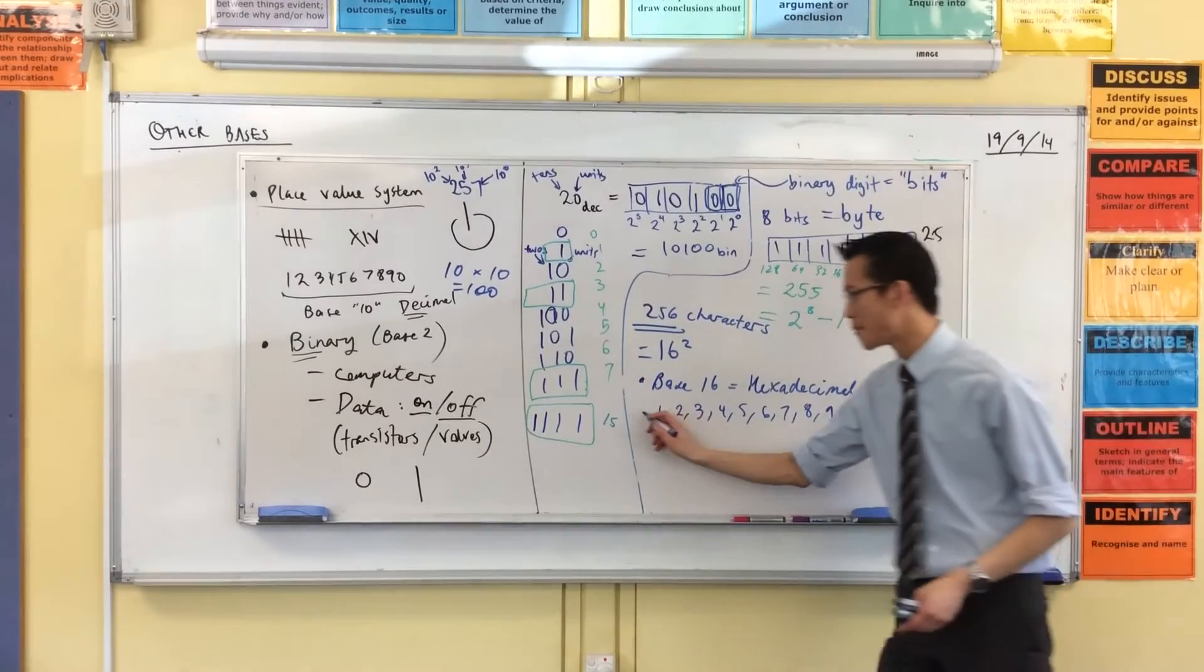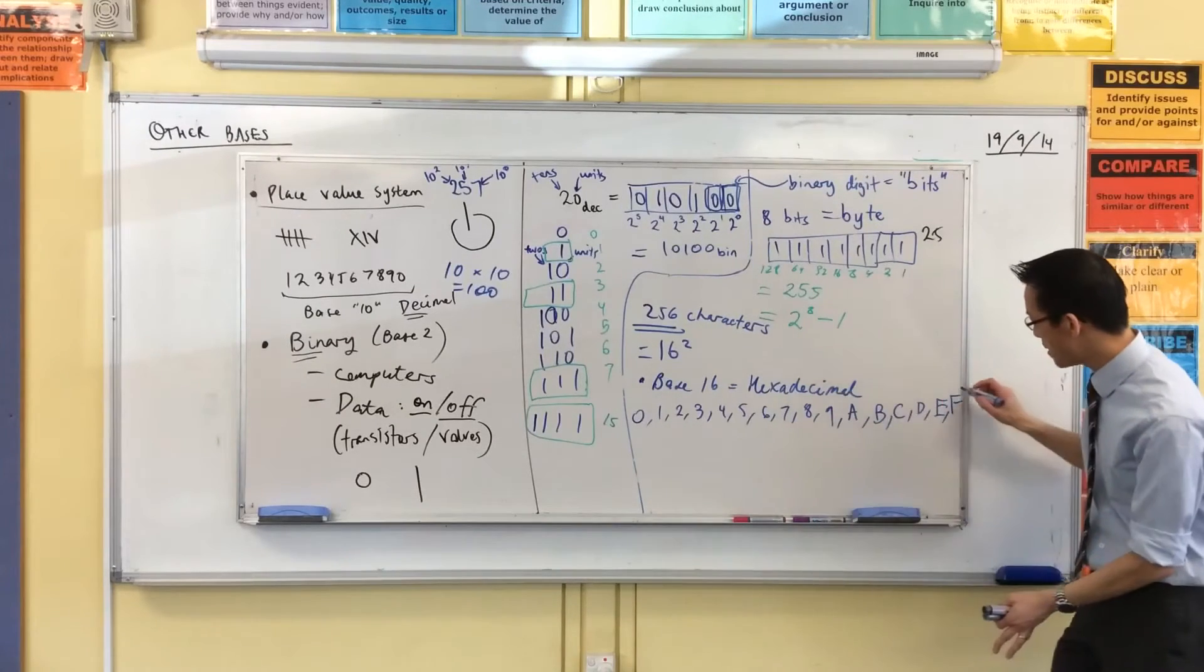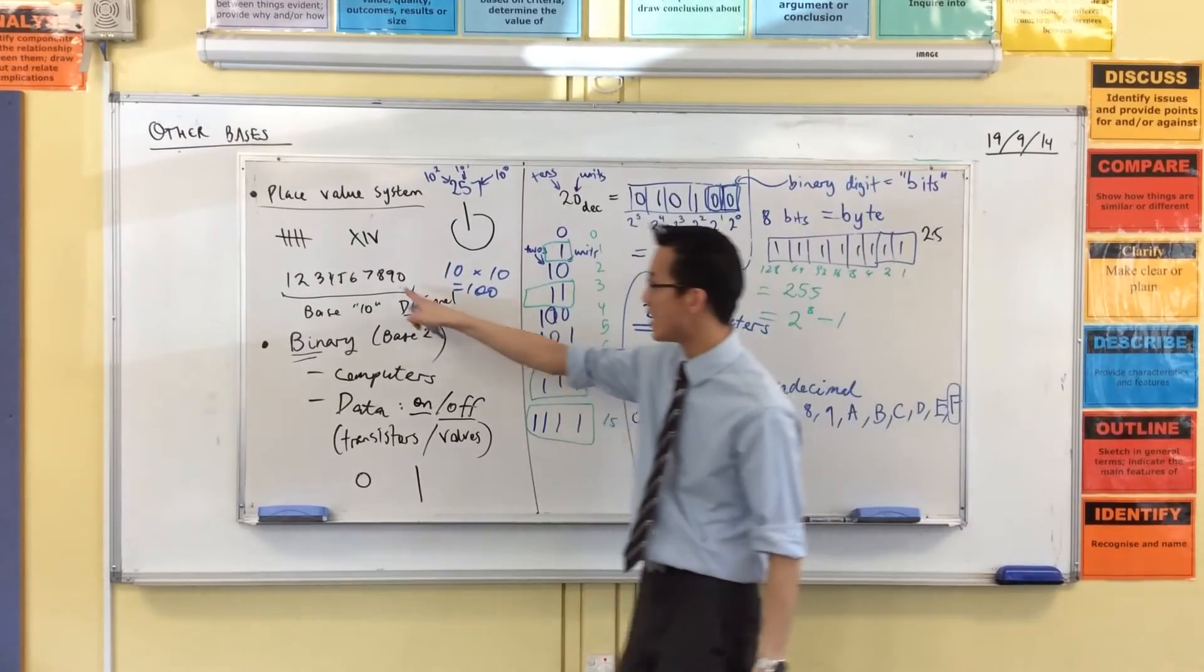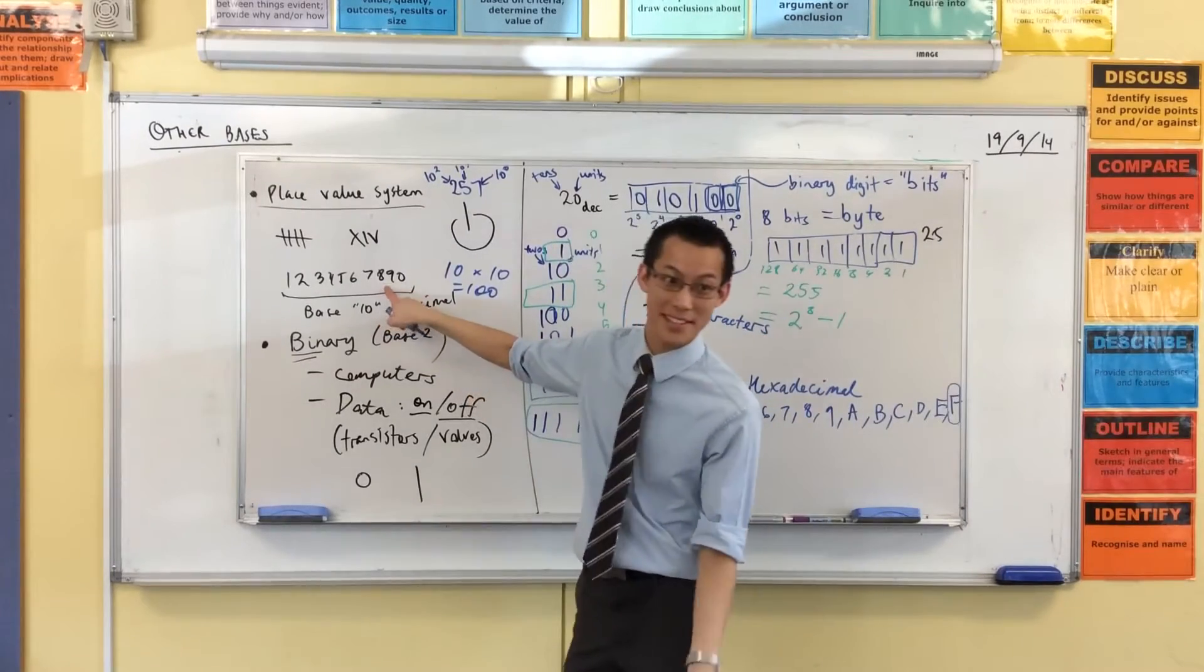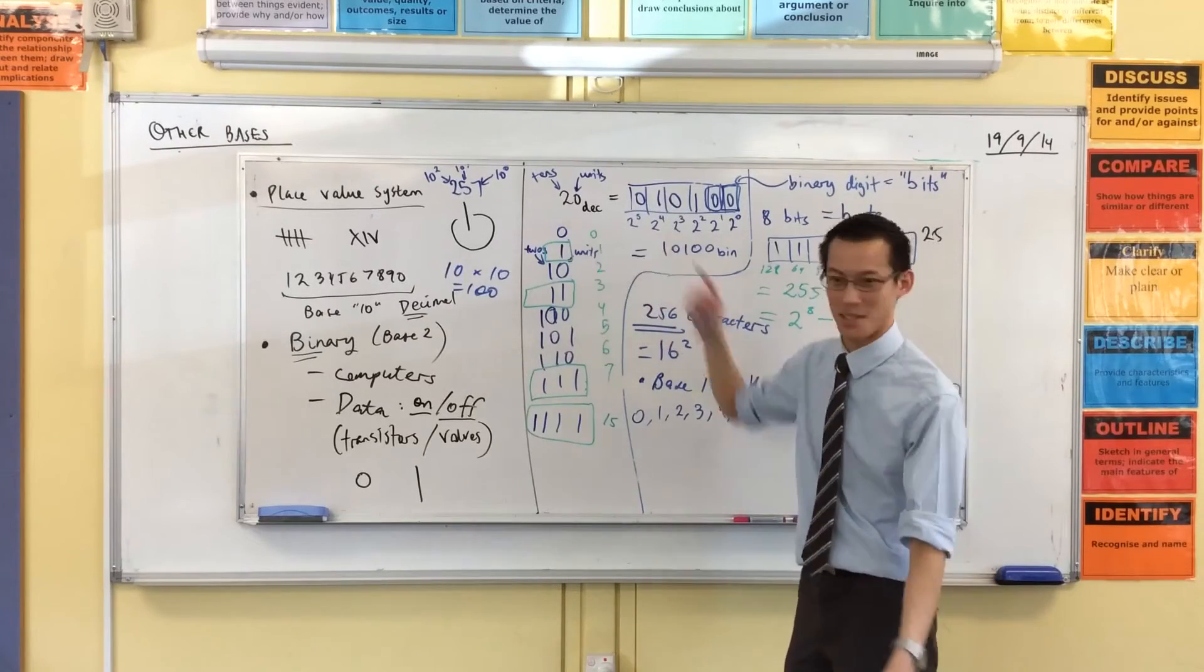So in total, if I add my 0 there, you see this is base 16, my biggest single character is 1 less than that, just like in base 10 your biggest single character is 1 less than 10, and in base 2 your biggest single character is 1 less than 2, it's just 1.